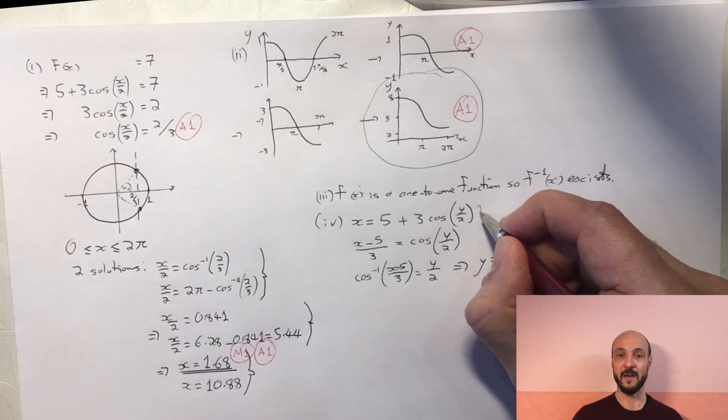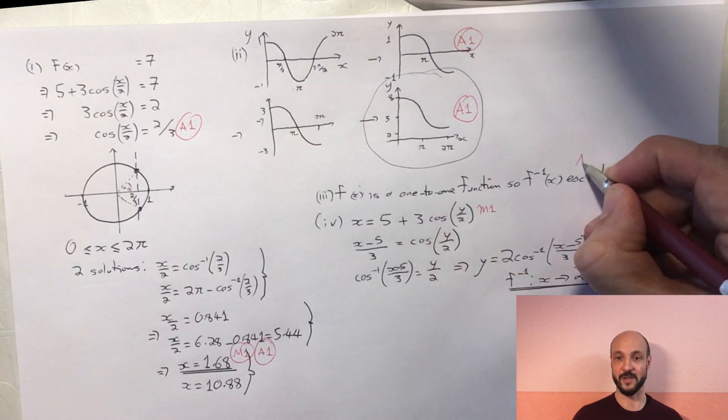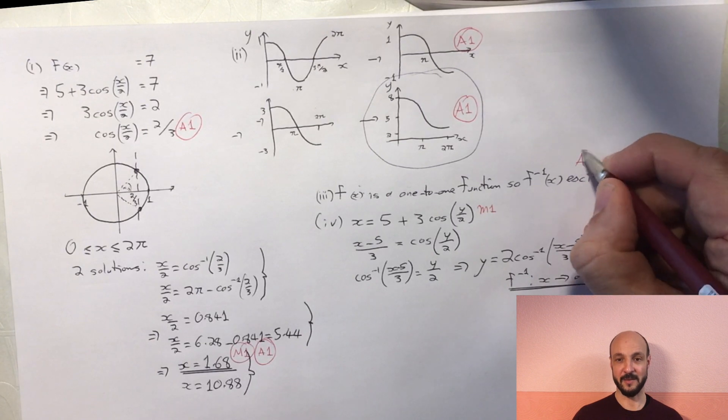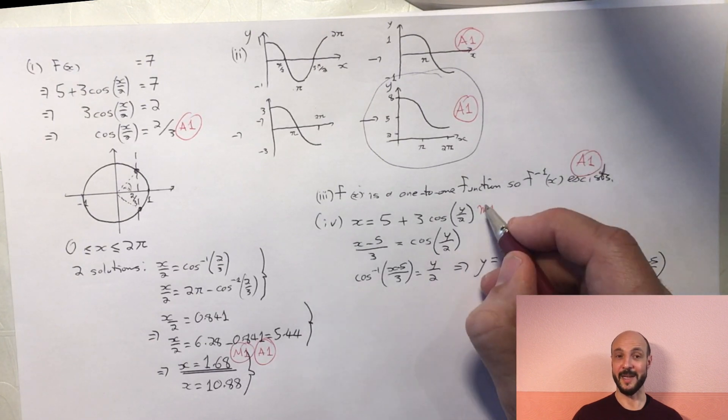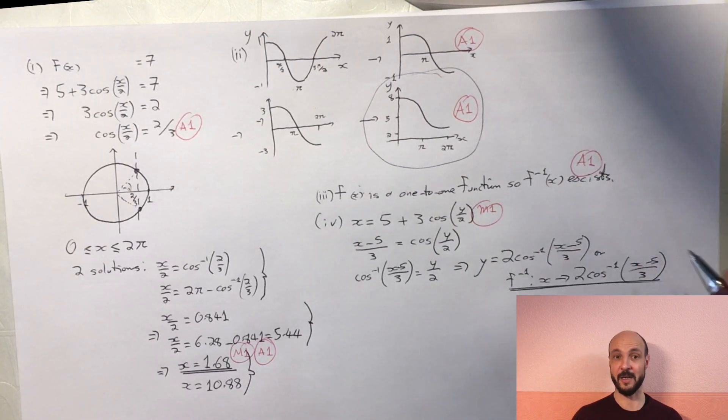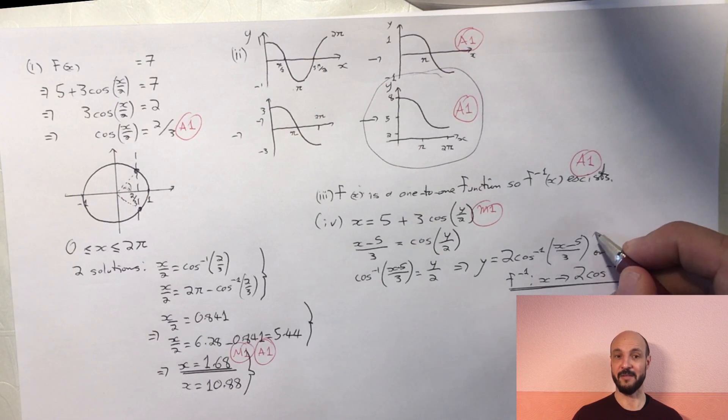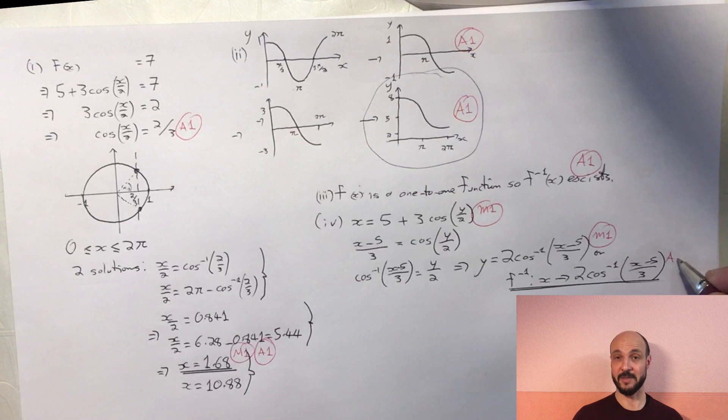Then in the third part of the question we just get one mark for explaining that it's a one-to-one function. And in the fourth part of the question which has three marks, we get a method mark for switching our variables, a method mark for then rearranging them to make y the subject, and an accuracy mark if we accurately find that the inverse function is x goes to 2 of inverse cos of x minus 5 over 3.